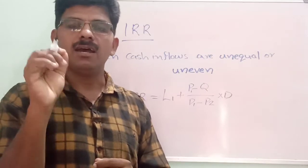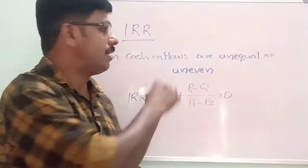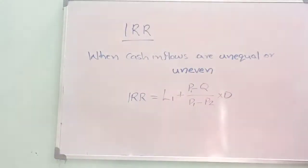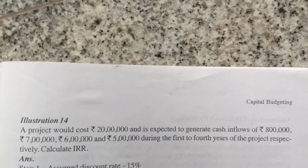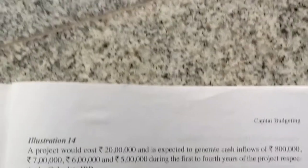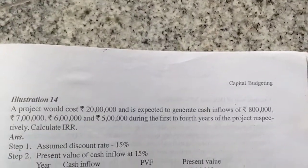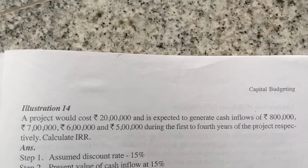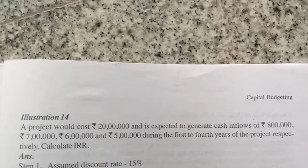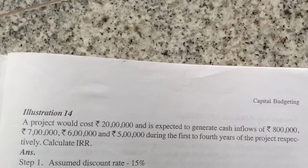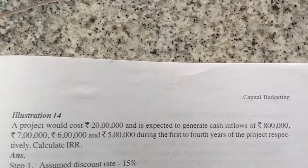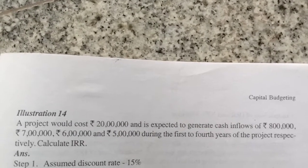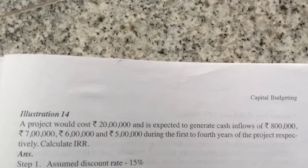Let us see how to solve a problem using this method. Illustration number 14: A project would cost rupees 20 lakhs and is expected to generate cash inflows of rupees 8 lakh, rupees 7 lakh, rupees 6 lakh, and rupees 5 lakh during the first to fourth years of the project respectively. Calculate IRR. The initial investment is 20 lakhs; first year 8 lakhs, second year 7 lakhs, third year 6 lakhs, and fourth year 5 lakhs.